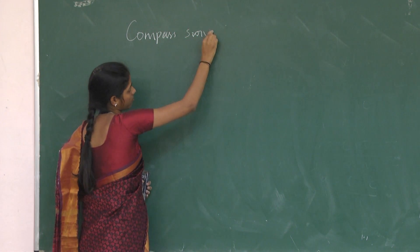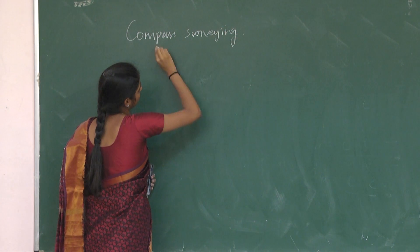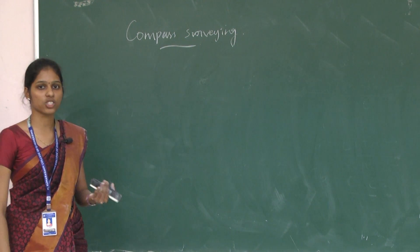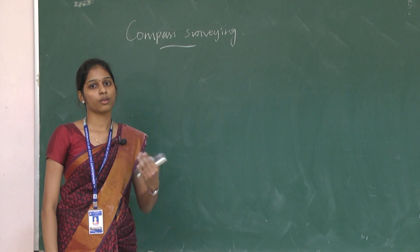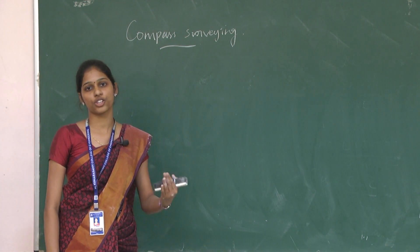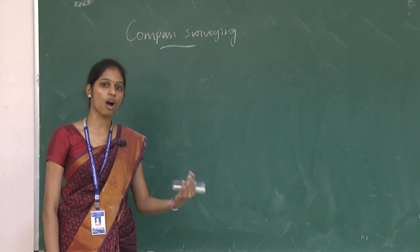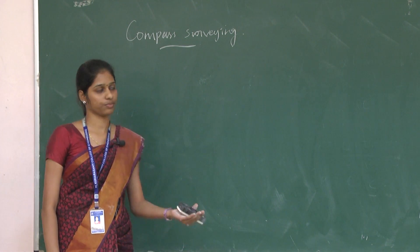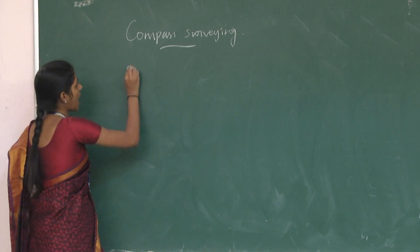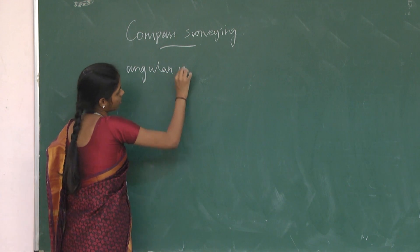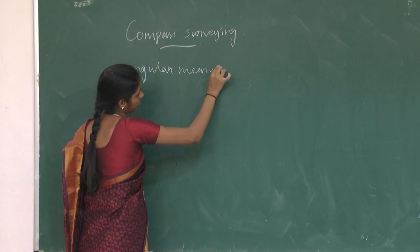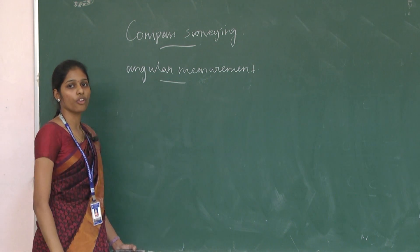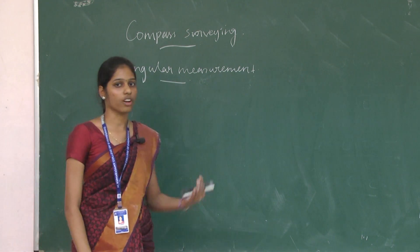In chain surveying, we only measure distance — this is called linear measurement. In compass surveying, we measure horizontal angles — this is called angular measurement.